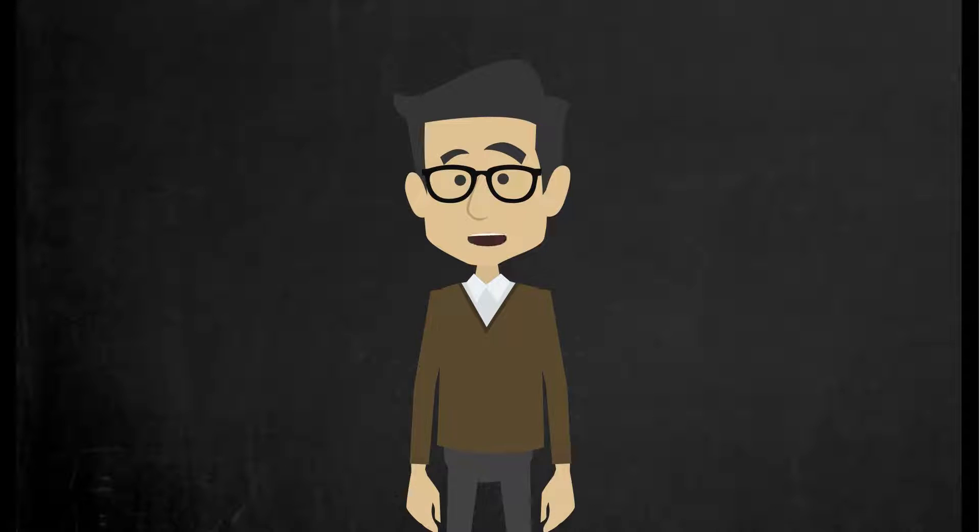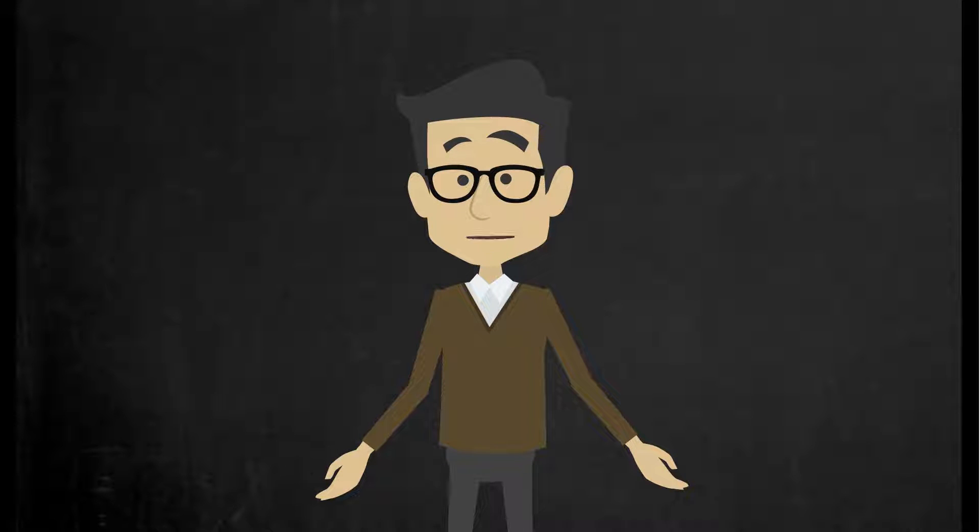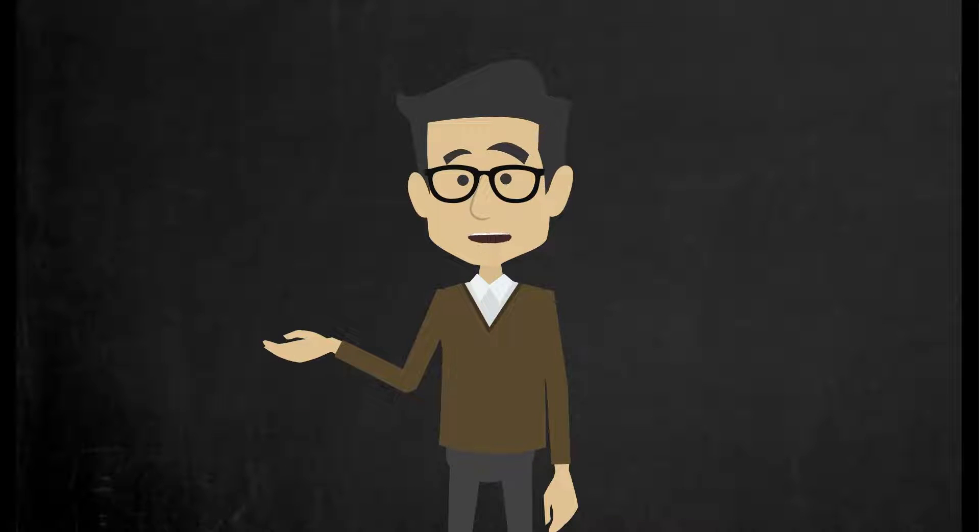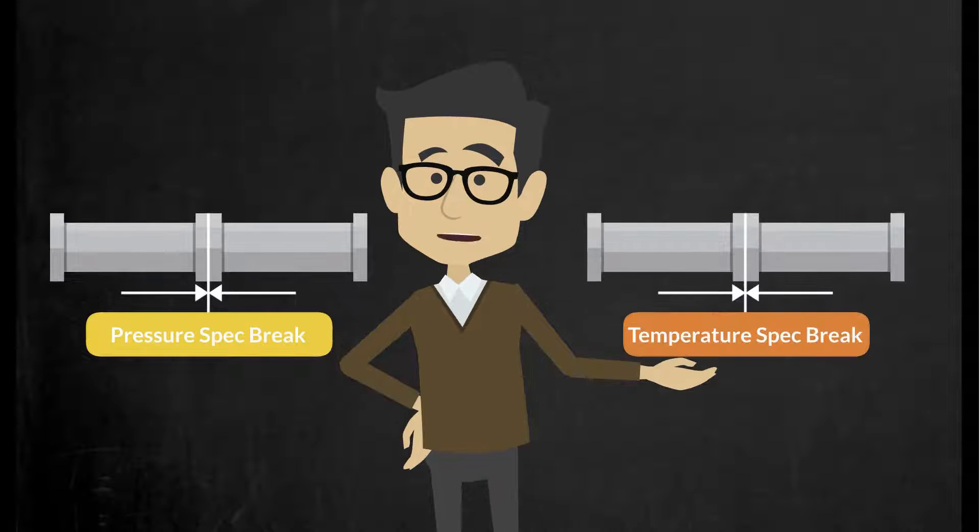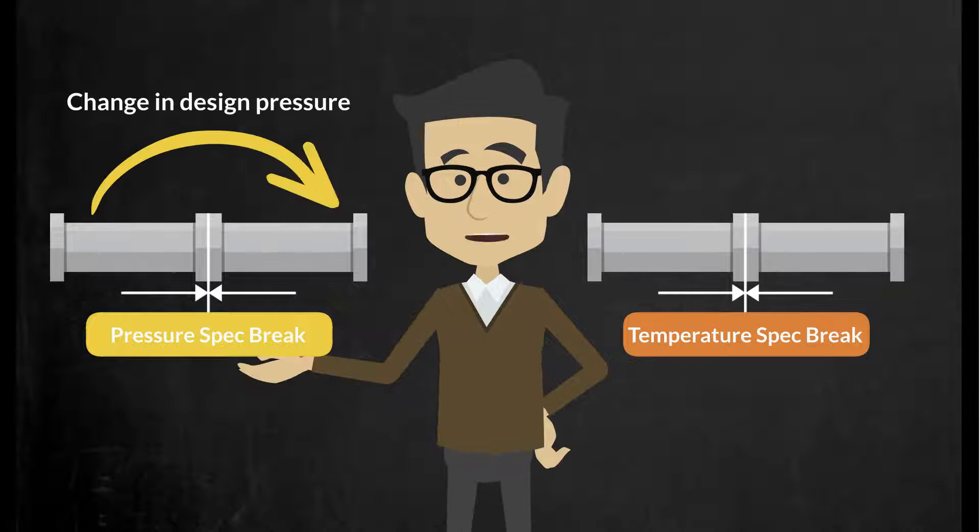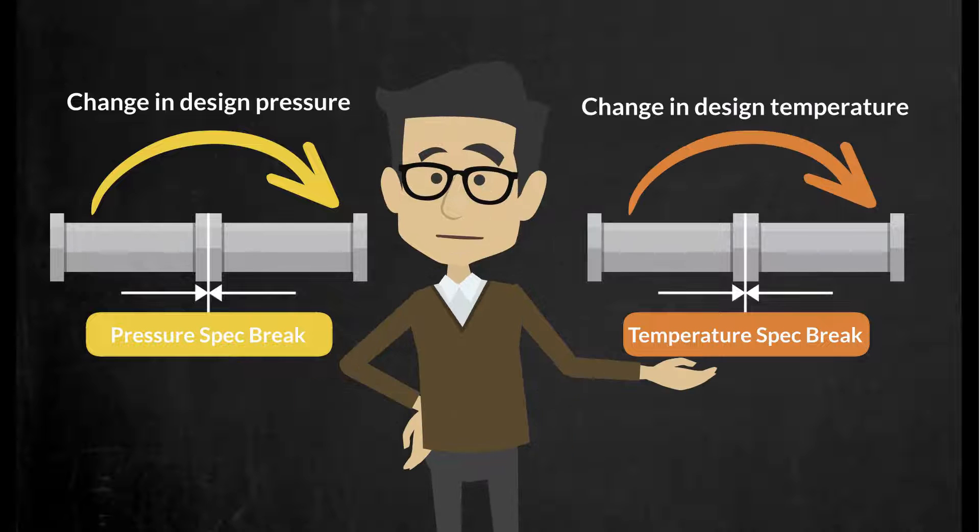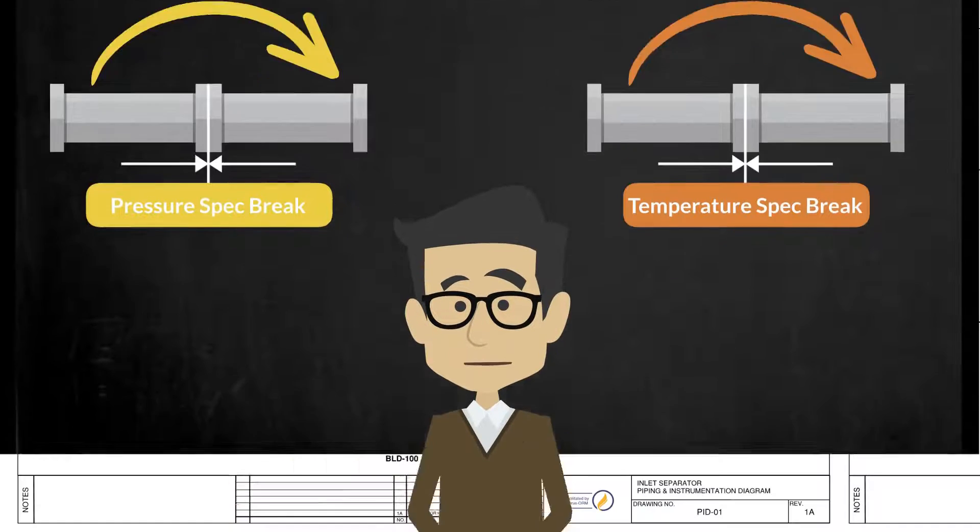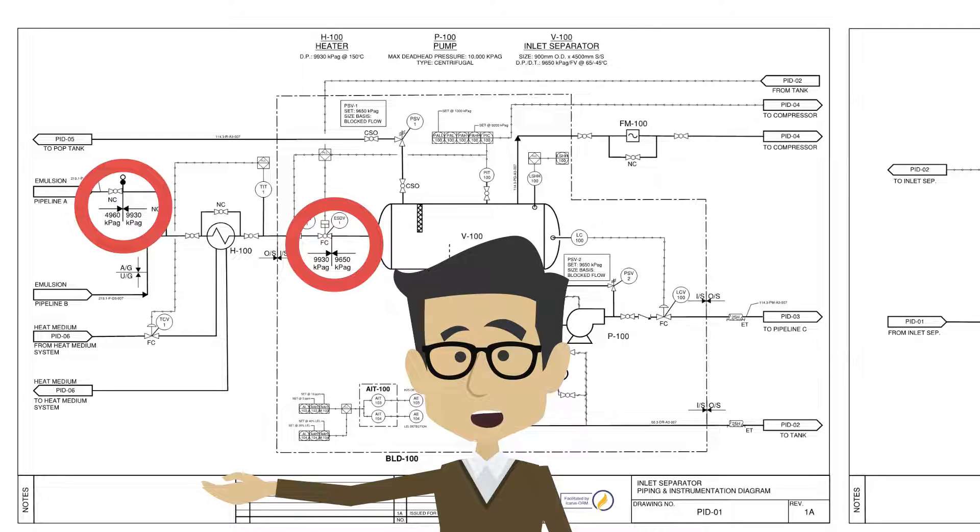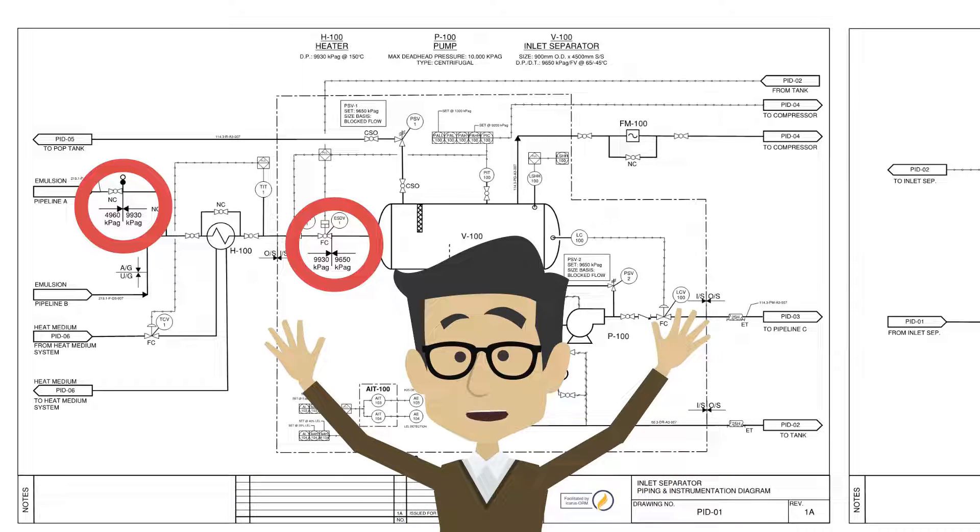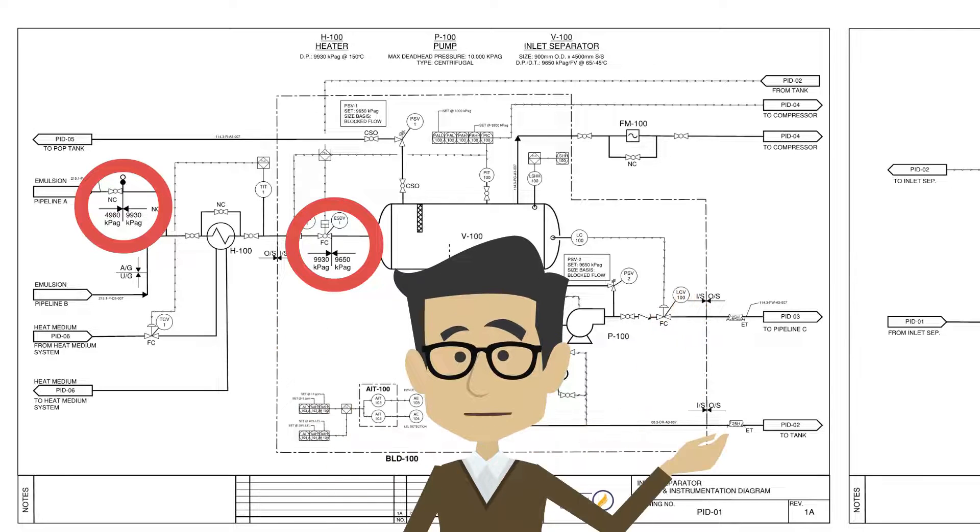These concerns can be identified on our PNIDs. That is why it is important to identify pressure and temperature spec breaks on piping lines. A pressure spec break defines where design pressure of piping changes. A temperature spec break shows where the design temperature of the piping changes. Finding spec breaks and noting them on PNIDs can help identify which sections of piping are more susceptible to overpressuring and where a rupture is most likely to occur.